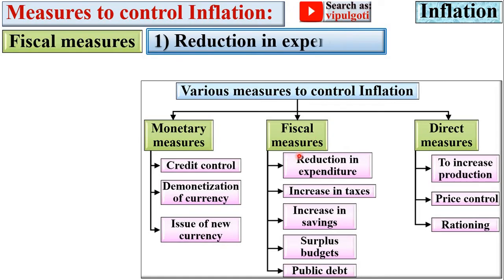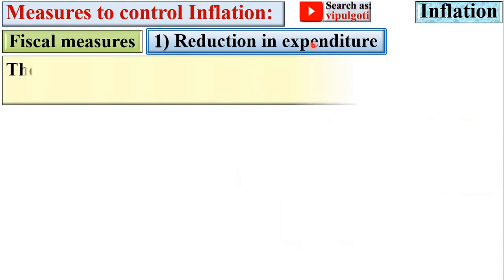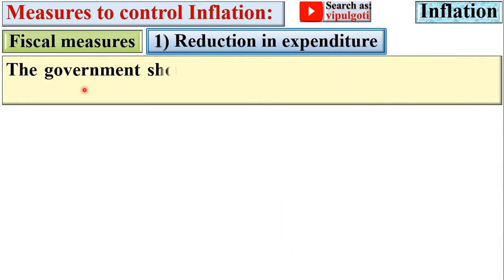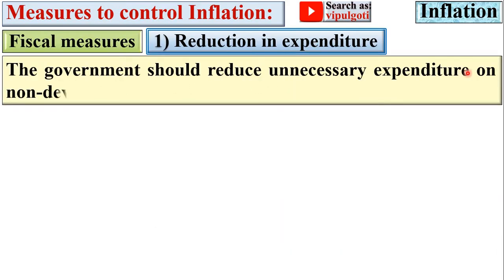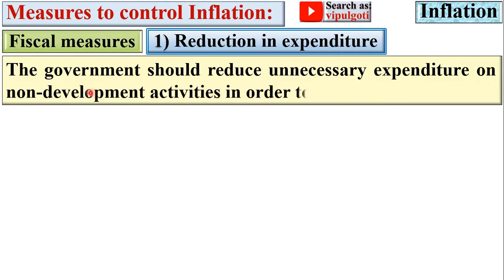Now, fiscal measures. The first one is reduction in expenditure. The government should reduce unnecessary expenditure on non-development activities in order to control inflation.